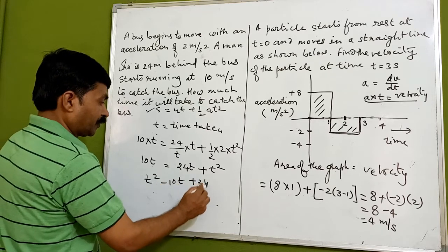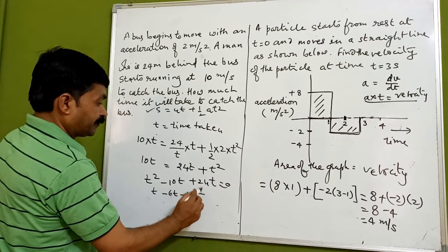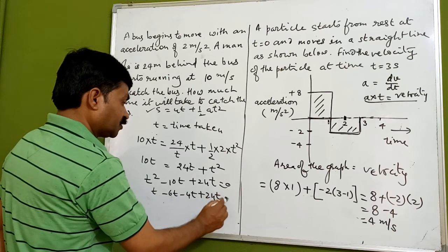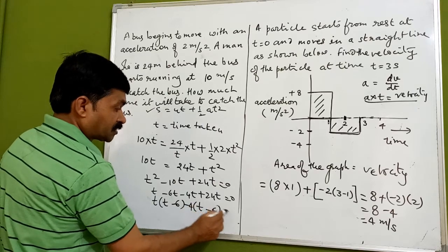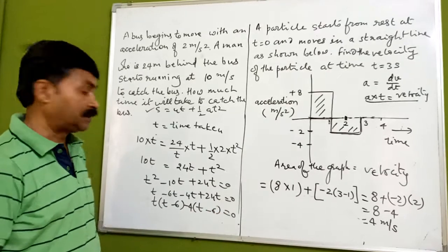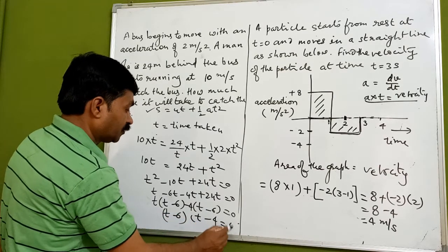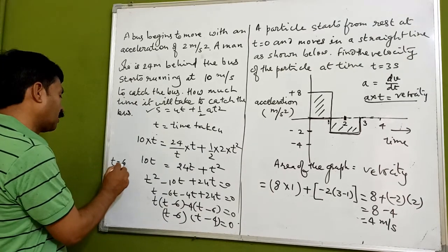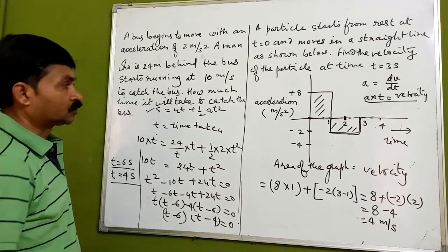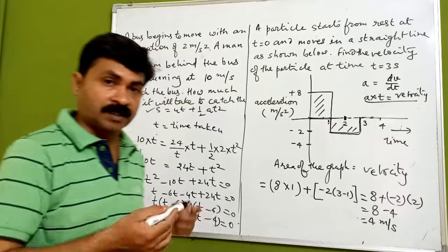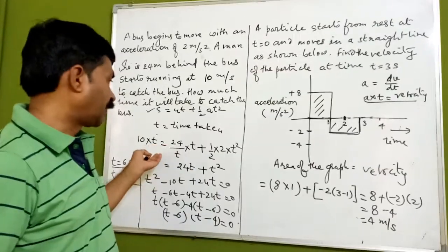Factoring t² - 10t + 24 = 0, we get (t - 6)(t - 4) = 0. Therefore, either t = 6 seconds or t = 4 seconds. This is the answer. This is how we can go through numericals based on equations of motion as well as graphical representation.